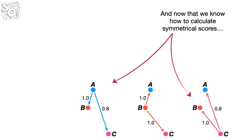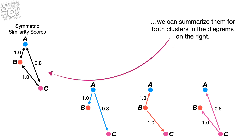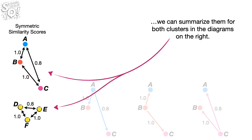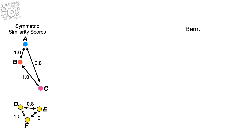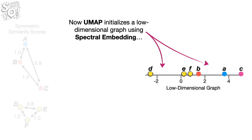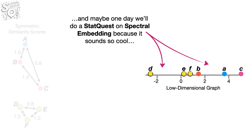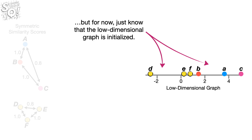And now that we know how to calculate symmetrical scores, we can summarize them for both clusters in the diagrams on the right. Now UMAP initializes a low-dimensional graph using spectral embedding. And maybe one day we'll do a StatQuest on spectral embedding, because it sounds so cool. But for now, just know that the low-dimensional graph is initialized. In this case, that means we have points spread out on a number line.